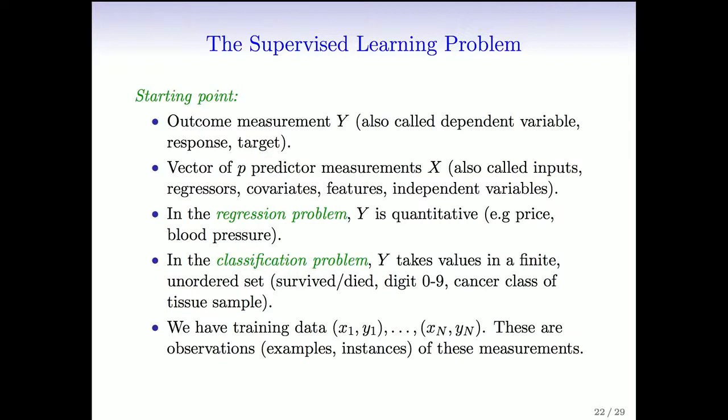We distinguish two cases. One is the regression problem, where y is quantitative, such as price or blood pressure. In the classification problem, y takes values in a finite, unordered set, such as survived or died, the digit class of 0 to 9, or the cancer class of a tissue sample.